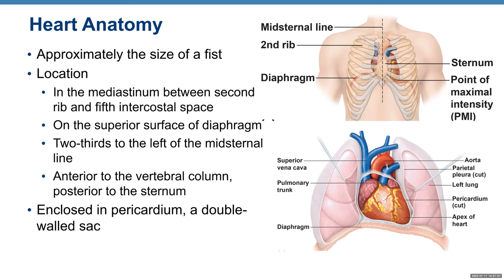The heart is two-thirds to the left of the mediastinal line, anterior to the vertebral column, posterior to the sternum, and enclosed in a special fibrous sac called the pericardium, which is double-walled.